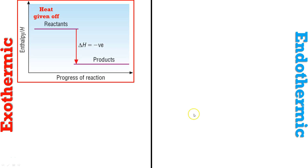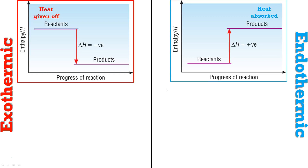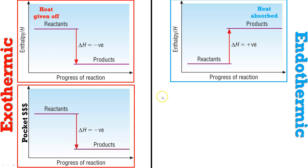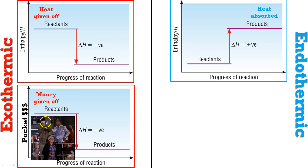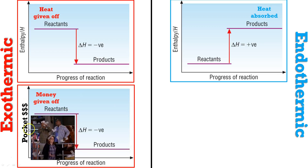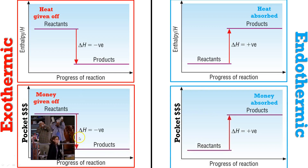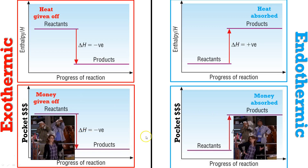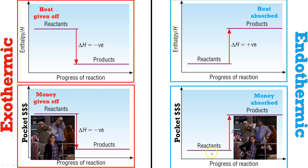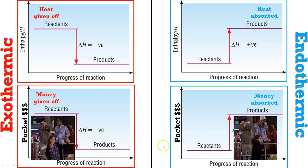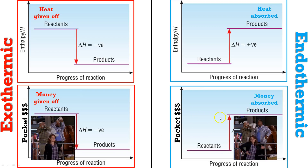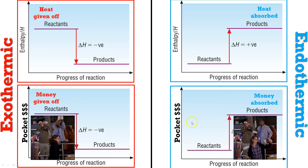The way to think about endothermic versus exothermic is almost like money. In an exothermic reaction, heat is given off — your pocket amount goes down because you're making it rain, giving all that energy out. So exothermic: pocket money goes down, that's why it's negative. In an endothermic reaction, money is absorbed — your pocket amount goes up. So endothermic is pulling money in, energy is going in, and that's why it's positive. Think of it in terms of money and it's easier to follow why exothermic is negative and endothermic is positive.